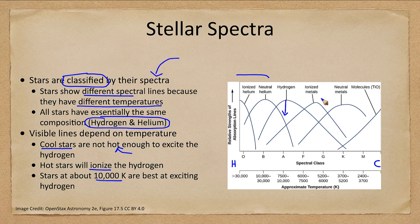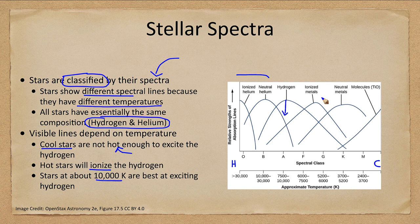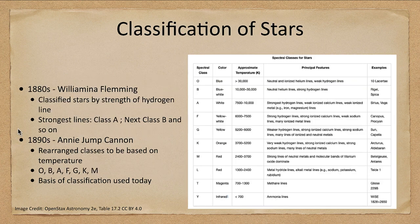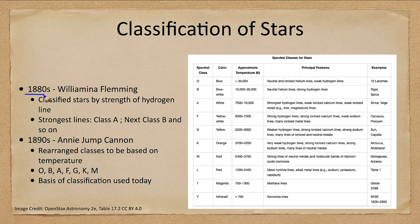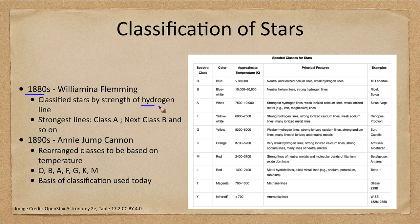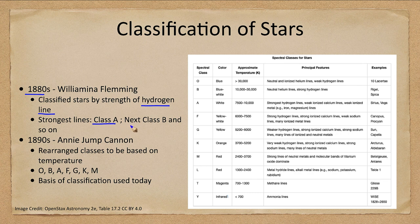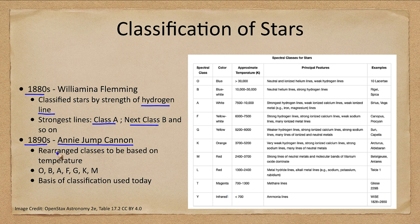Just because a line is not present in the star does not mean that that element is not present in the star. Now how do we go about classifying stars? Well the process started back in the 1880s with Wilhelmina Fleming, who classified stars based on the strength of the hydrogen line. Her strongest class was class A, then B, and so on, and then worked down through the alphabet.